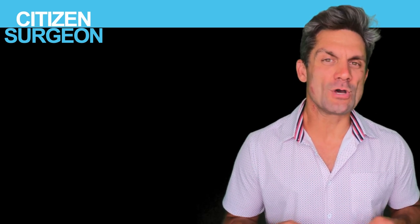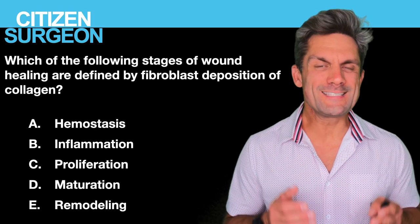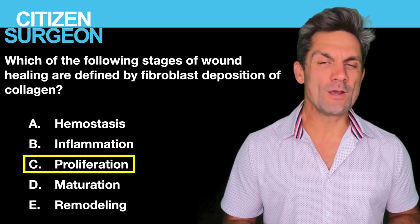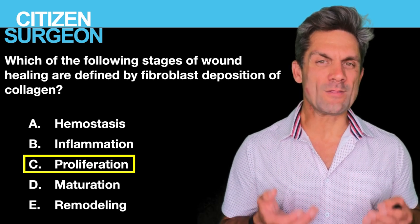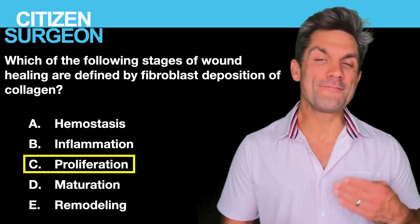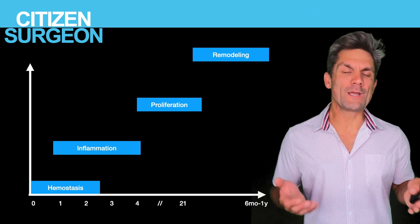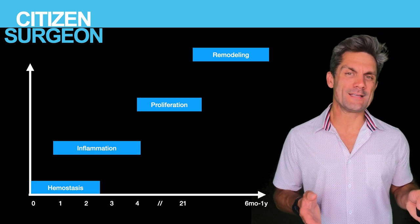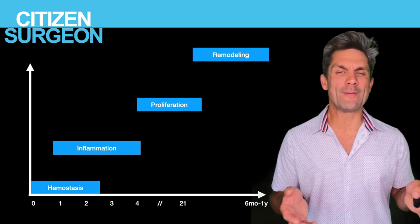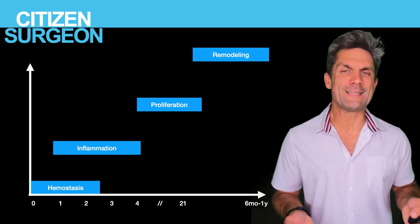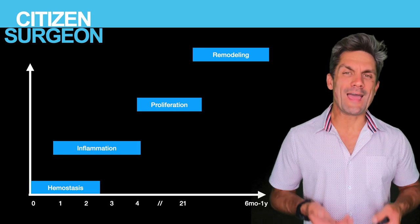Now we're going to go through each of the answers. That first question was getting at the different stages of wound healing — in which stage do you have fibroblast deposition of collagen? That's C, the proliferative phase. Looking at a timeline, we have the hemostasis phase immediately, then inflammation from day one to day three, around day four we get the proliferative phase lasting approximately 17 days, and then around day 21, we get the remodeling phase.